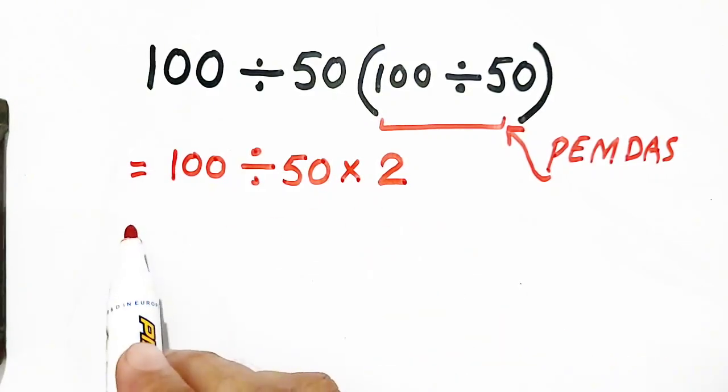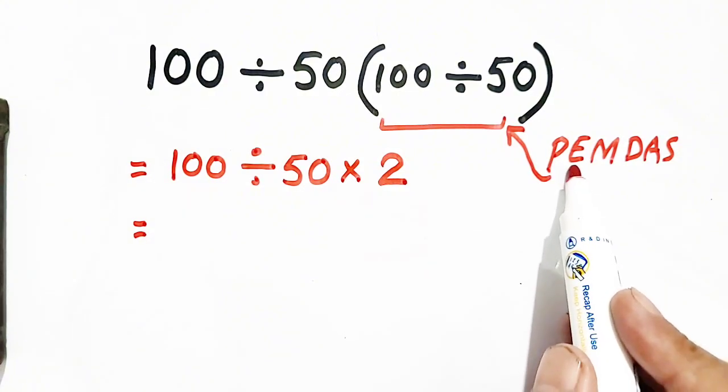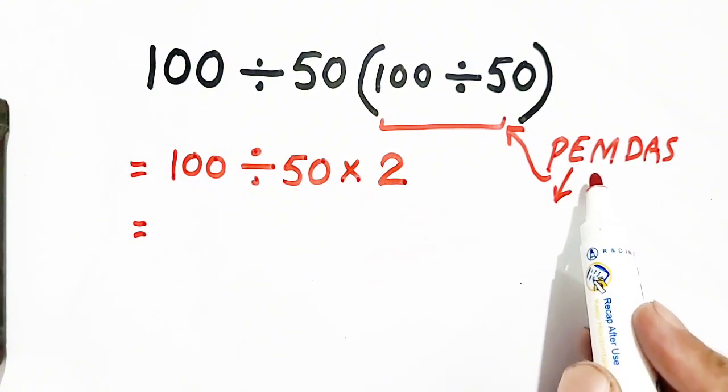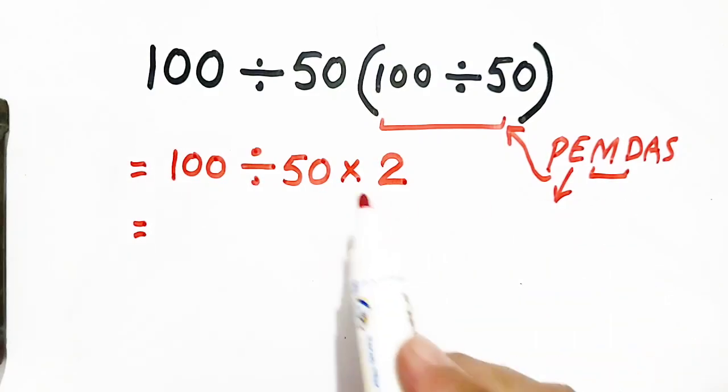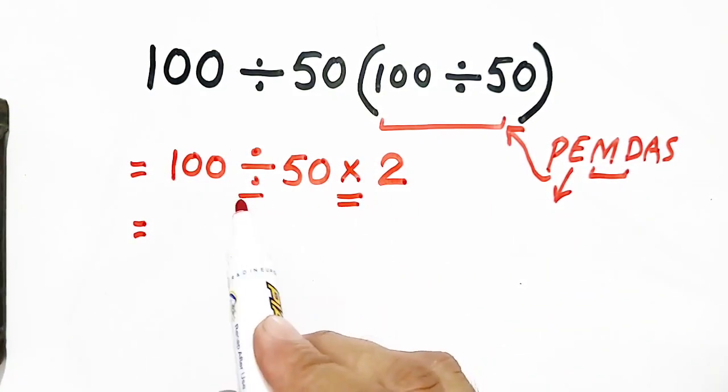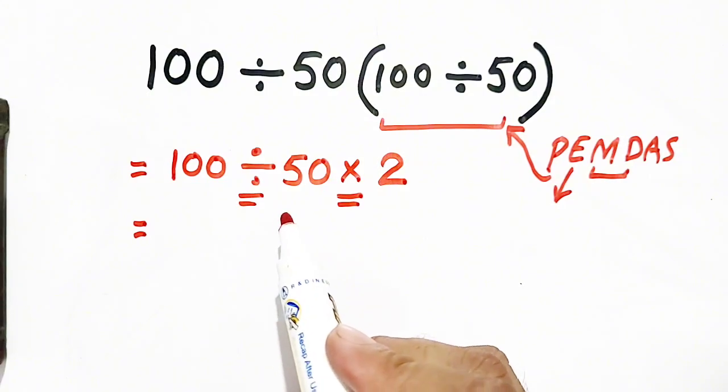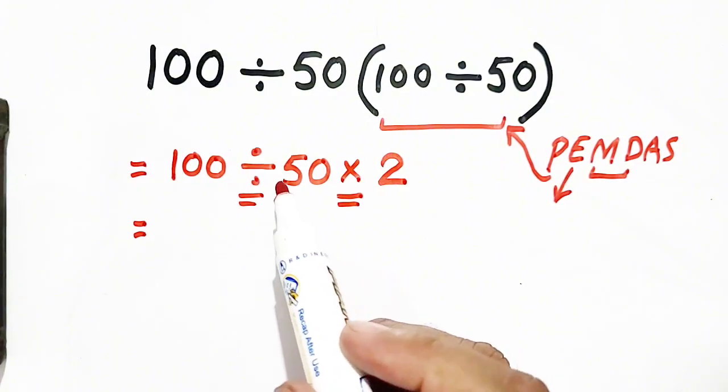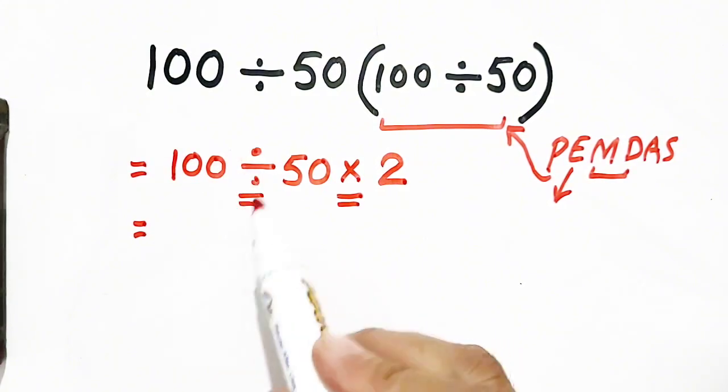Okay. Now, exponent is not involved. Multiplication and division. Multiplication is this and division is this. Now, we will watch that what operation is at left.